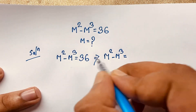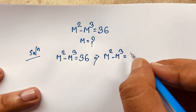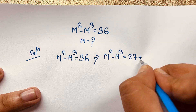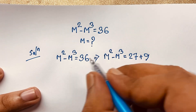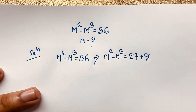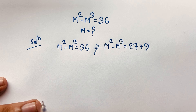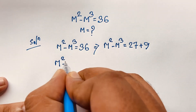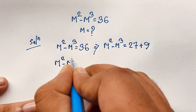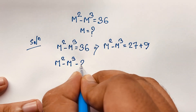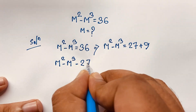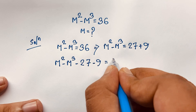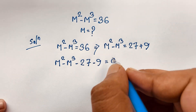I take our question. Now at this moment you can see easily here m squared minus m cubed, and this 36 — it will be 27 plus 9. 20 plus 7 plus 9 equals 36. Now here m squared minus m cubed minus 27, and if I move this positive 9 to the other side it will be negative 9, equal to 0.